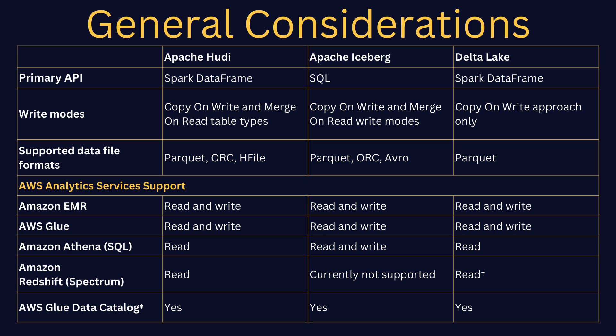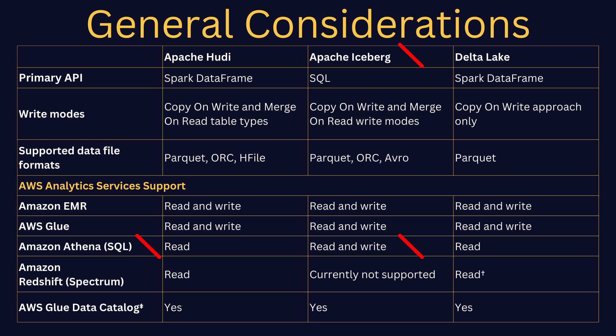Lastly on the table, I've summarized the support offered from different AWS services for each of these open source table formats. The key differentiator I find when talking to customers is actually Apache Iceberg. You can see here that it can do writes and reads through Athena, which means that you can use SQL to carry out ETL. That is a common pattern I see amongst customers who side with Apache Iceberg — they want to perform SQL ETL for their writes, and therefore they choose Apache Iceberg.